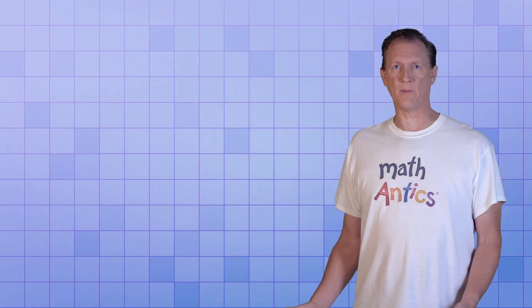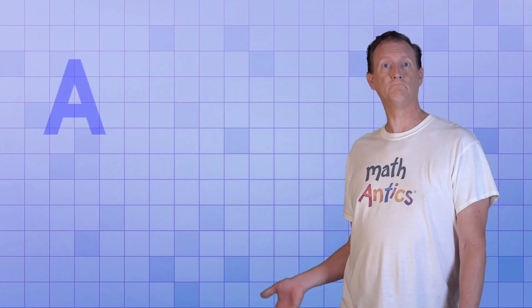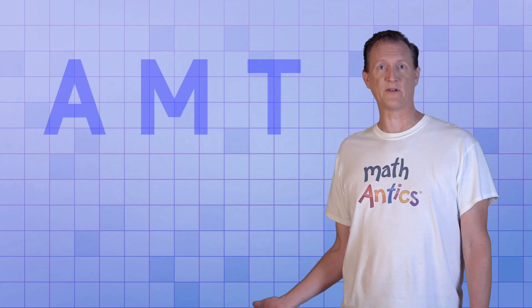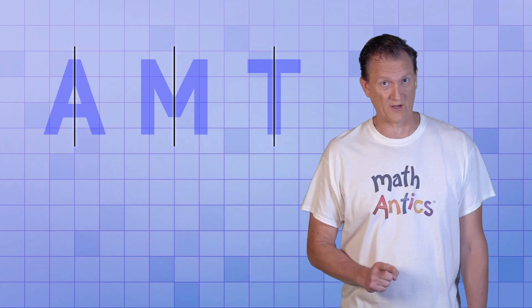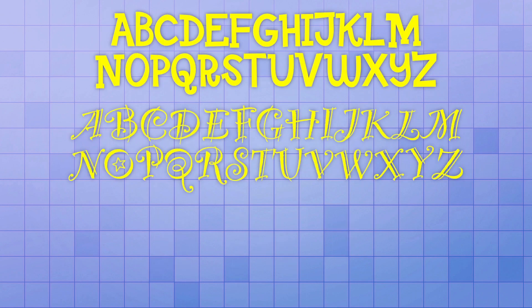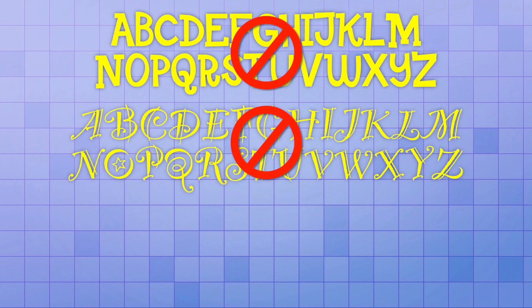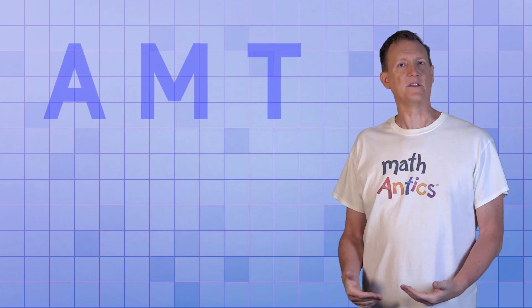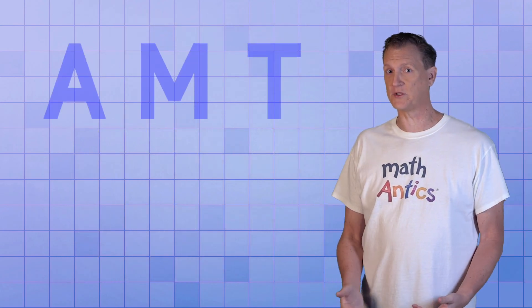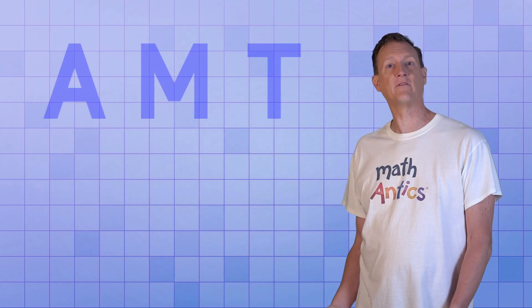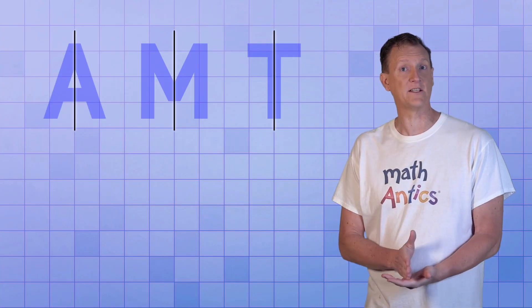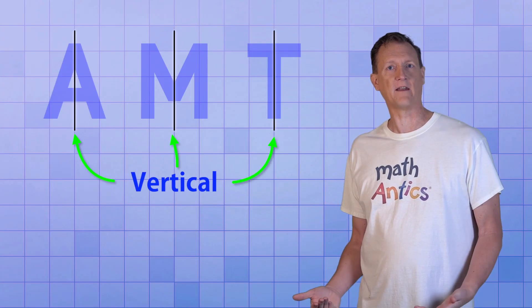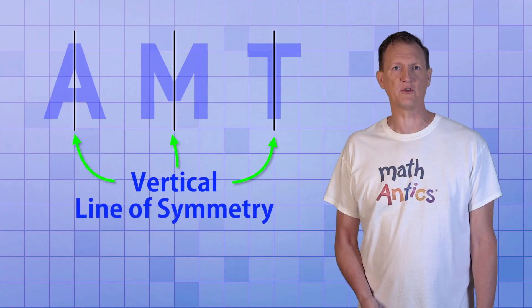A lot of capital letters can be symmetrical too. Letters like A, M, and T can be symmetrical if you use the right kind of font. Not all fonts show these letters as symmetrical, and some fonts are so fancy that none of their letters are symmetrical. Notice that just like other symmetrical images, these letters have a line of symmetry that is exactly straight up and down — it's vertical — so it's called a vertical line of symmetry.